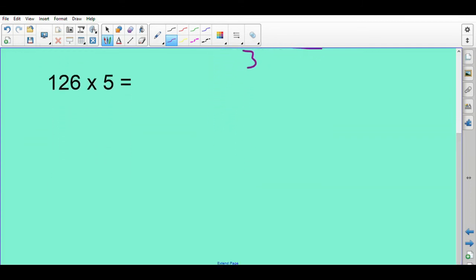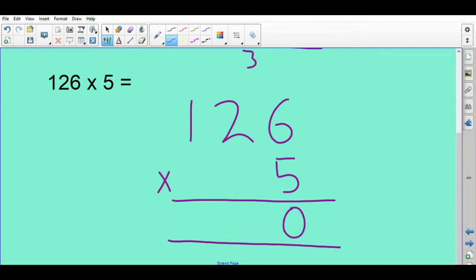126 times 5. Set it out. When the children work in their maths books, they've got squares. So always tell them to work one number per square just so they've got plenty of room for all the carries and things like that. So 6 times 5 is 30. Carry the 3. 2 times 5 is 10. Add the 3 is 13.